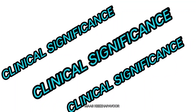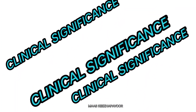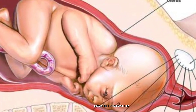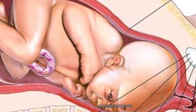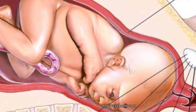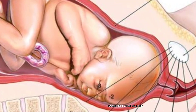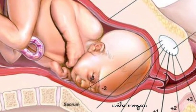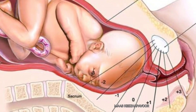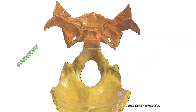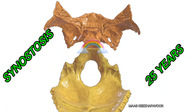Now let us see some clinical significance of the occipital bone. In vertex presentation of the fetus, the position of the engaged head within the pelvic cavity is classified based on the position of the occipital bone. Left occipital anterior position is the commonest and best for the fetus to pass through the birth canal. The synchondrosis joint between the basi-sphenoid and basi-occipital becomes synostosis at the age of 25. This is a medico-legally important fact to remember.